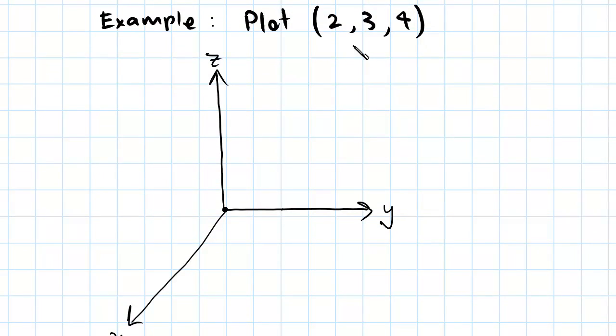We'll just mark those on our axes now. We'll go out 2 here in the X direction like that, we've got 3 in the Y direction, and 4 in the Z direction, about there. Now the way we're going to draw this point on...